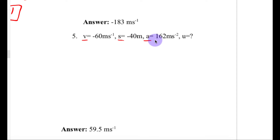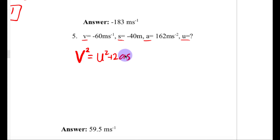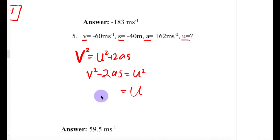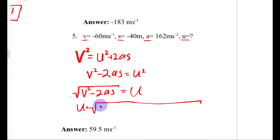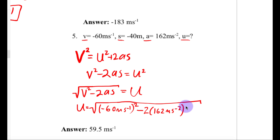Moving on to number five, I have V, S, A, and U. The equation that connects all four and nothing else is V squared equals U squared plus 2AS, and I'm looking for U by itself. I'll start by subtracting 2AS from both sides to get V squared minus 2AS equals U squared. Taking the square root of both sides gives U equals the square root of V squared minus 2AS. Plugging everything in, this works out to 59.5 meters per second.